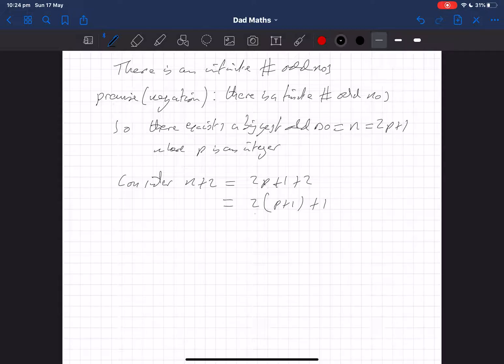Now this is an odd number. Why? Well, because we have an integer p plus 1, which is still an integer, multiplied by 2, means we're going to get something which is a multiple of 2, that is even. So this thing must be odd because it is one more than an even number.